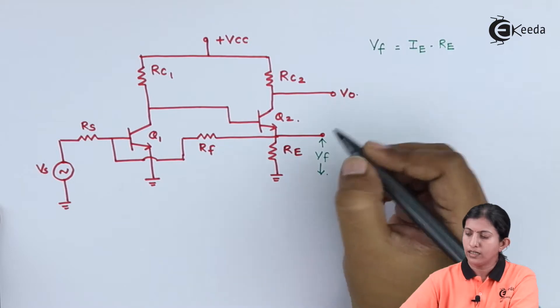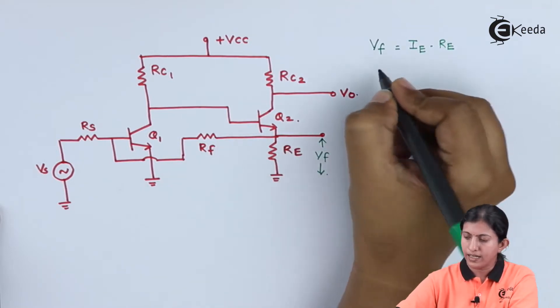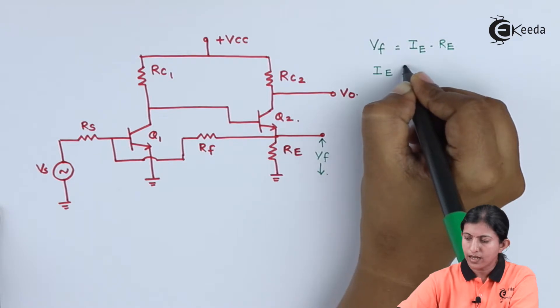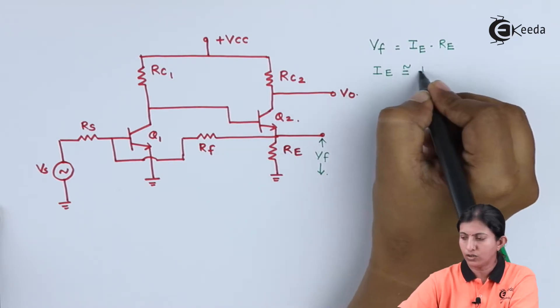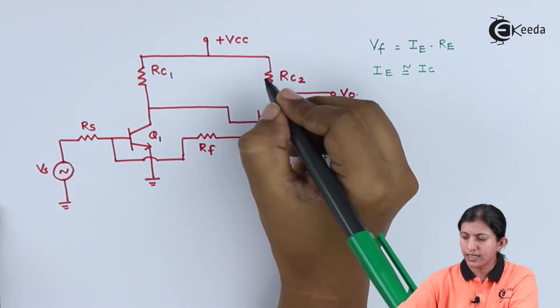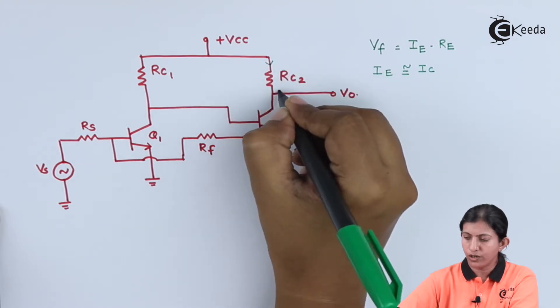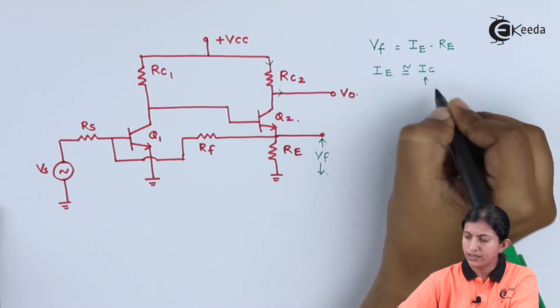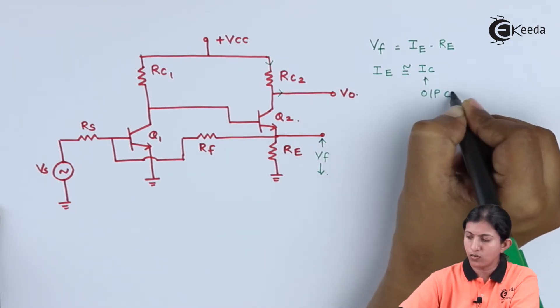The value of Ie in a transistor is always approximately equal to Ic. And Ic is the current flowing through the output terminal, so we can say Ic is the output current.